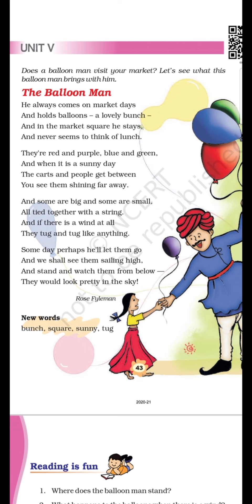So in the third stanza, they are saying that some balloons are big and some balloons are small, and all these balloons are tied together with a string. Dear children, if there is wind blowing, what happens? They tug and tug with each other. That means it seems like they are pulling their own thread and want to free themselves and go high up in the air.